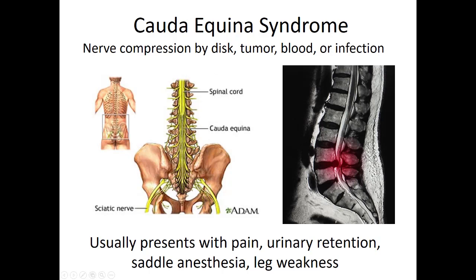The reason it's called cauda equina — which literally means 'horse's tail' in Latin — is that the spinal cord ends around L2, but a whole bundle of nerve roots continues below. With the bones removed, you can see these long nerve roots that come down kind of like a ponytail. They can be compressed in the lower spine, and that pressure must be relieved quickly or permanent damage results.